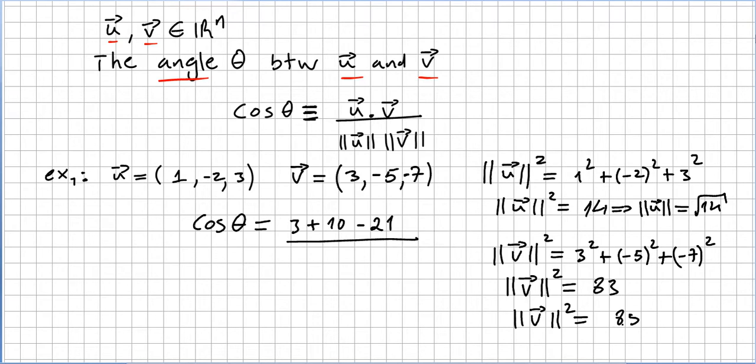So the absolute value of u will be 14 and the absolute value of v will be 83. So here we have 14 times 83, so cosine of theta will be minus 8 dividing square root of 14 times square root of 83. So this will be the cosine of theta.